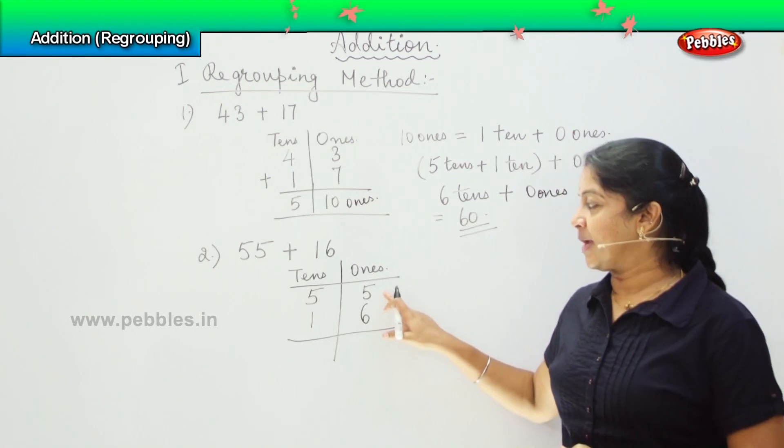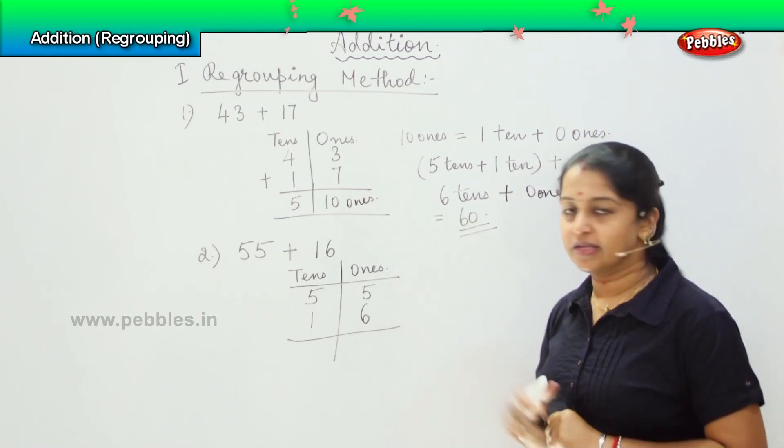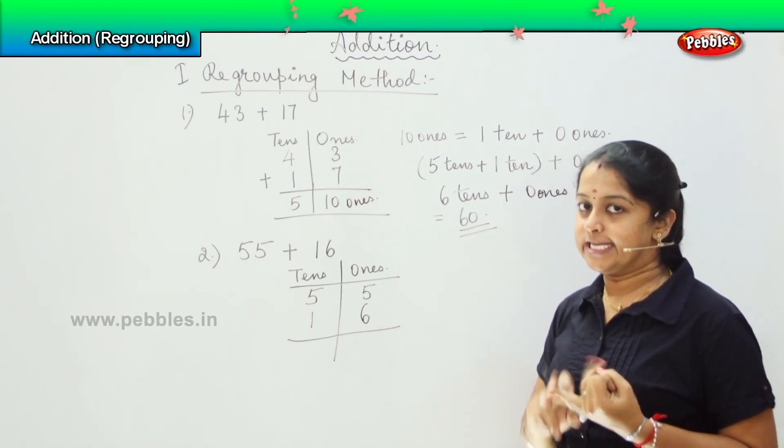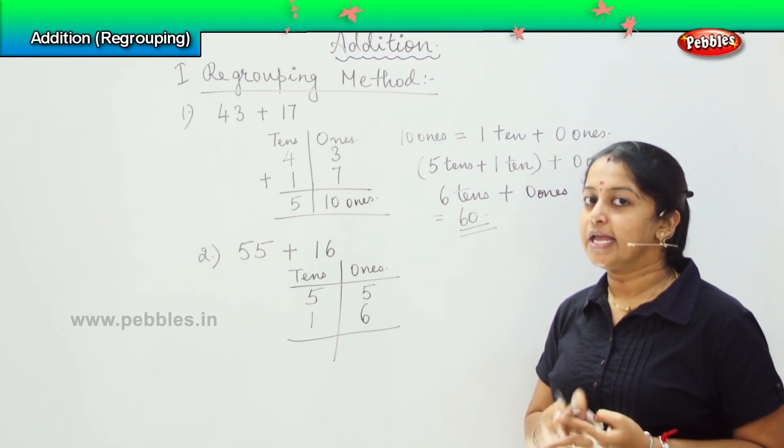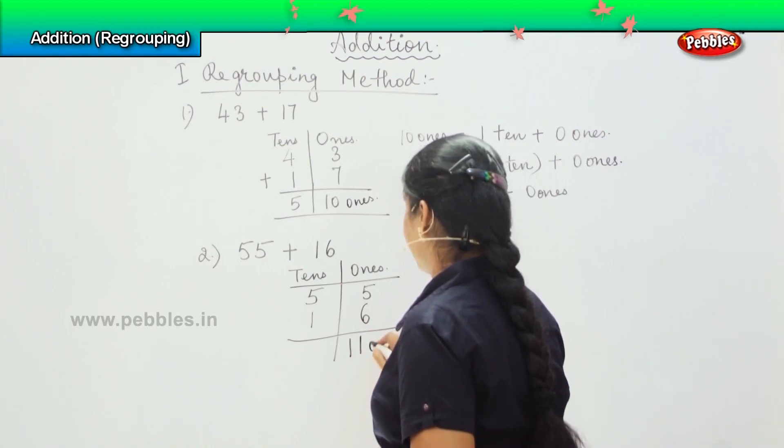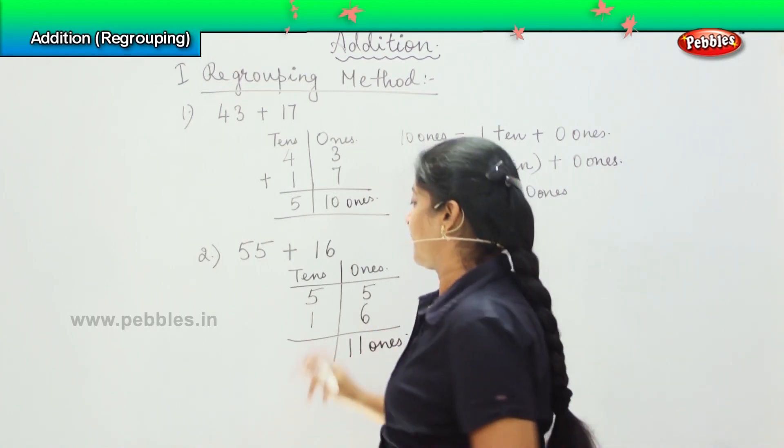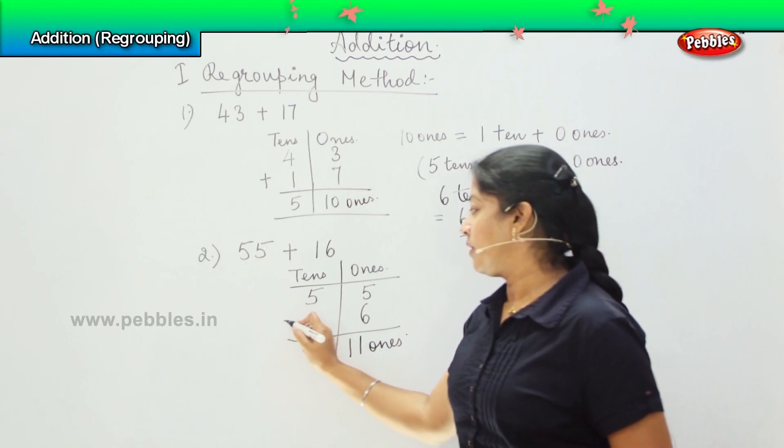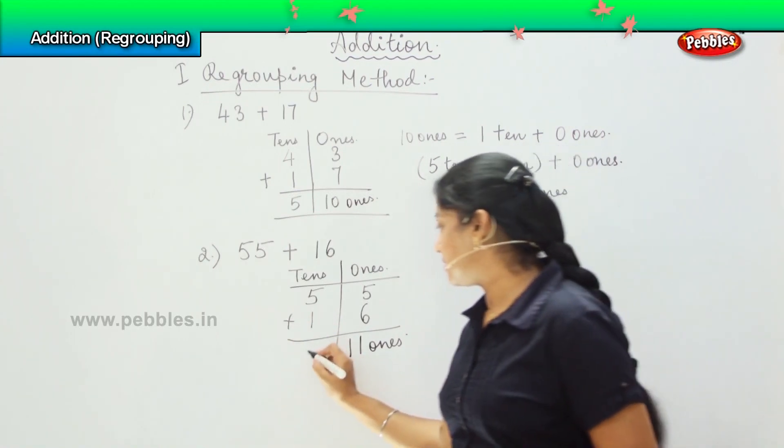So shall we count? Keeping 5 in the mind and 6 in the fingers. So after 5, 6, 7, 8, 9, 10 and 11. So it becomes 11 ones and what is 5 plus 1? 5 plus 1 is nothing but 6.